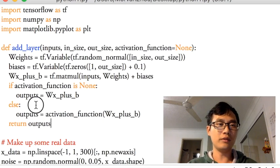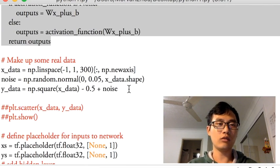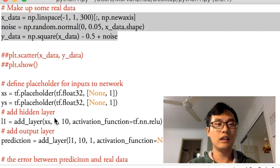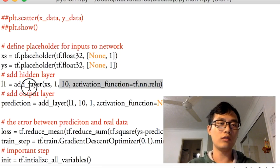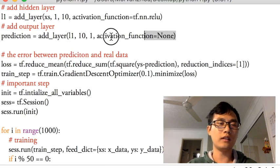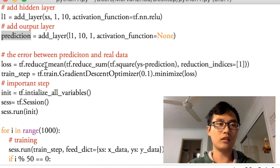So we built a function over here, add_layer. Then we made up some real data. And we defined two placeholders for xs and ys, and defined the first layer as L1. And defined the output layer as prediction, the output of the output layer is prediction.